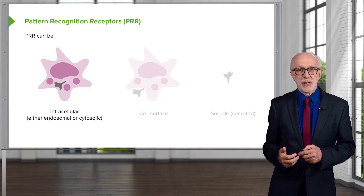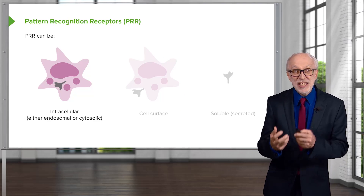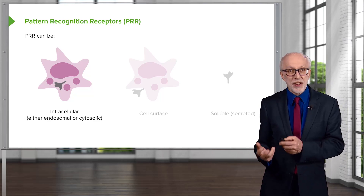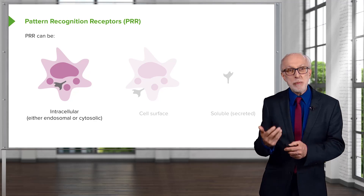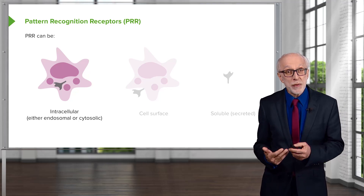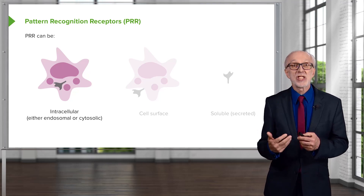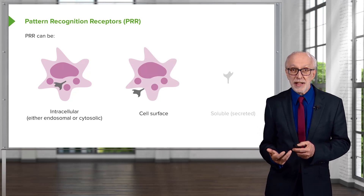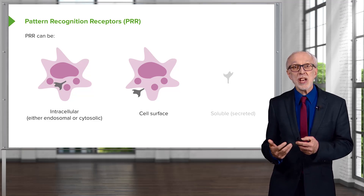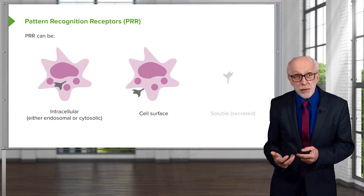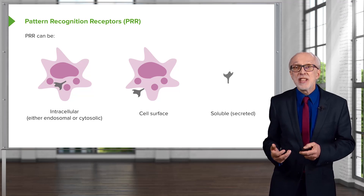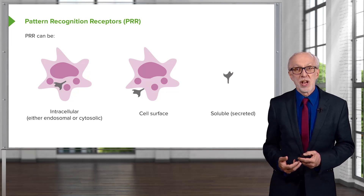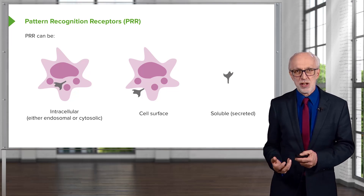Pattern recognition receptors can be intracellular — inside a cell — where they may be present on the endosomes within the cell or within the cytosol of the cell. Alternatively, they may be present on the surface of cells as cell surface pattern recognition receptors, or they may be released or secreted from cells as soluble pattern recognition receptors.